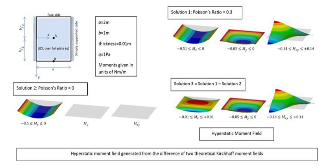A system is said to be elastic if any deformations caused by applied forces will spontaneously and completely disappear once the applied forces are removed. The calculation of the stresses that develop within such systems is based on the theory of elasticity and infinitesimal strain theory. When the applied loads cause permanent deformation, one must use more complicated constitutive equations that can account for the physical processes involved: plastic flow, fracture, phase change, etc.